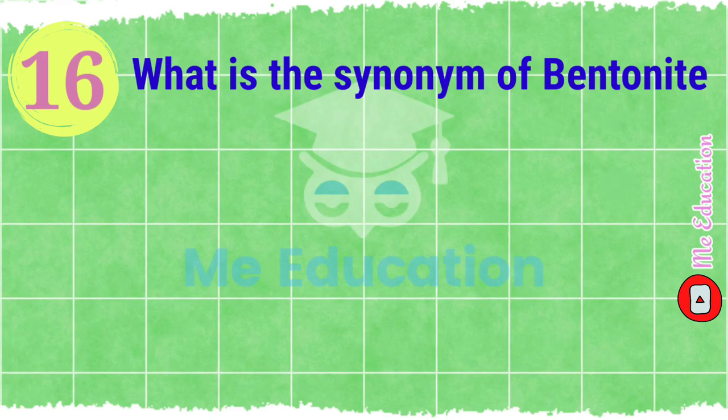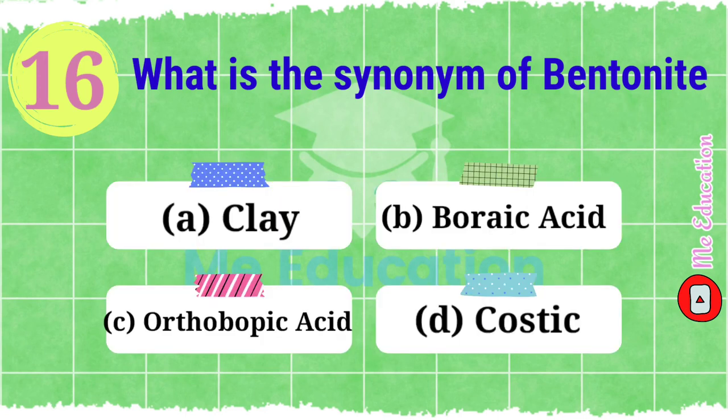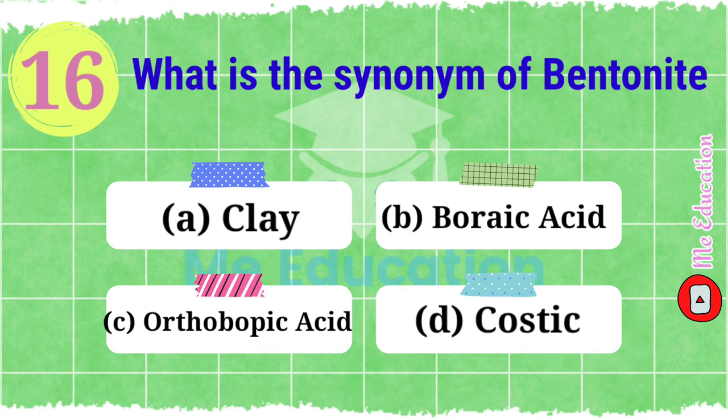Question number sixteen: what is the synonym of bentonite? Options: A) clay, B) boric acid, C) orthoboric acid, D) caustic. The right answer is option A, clay.